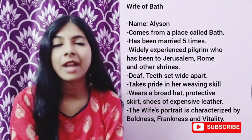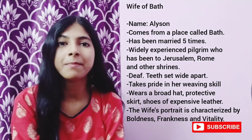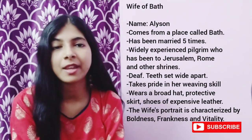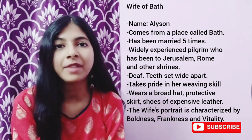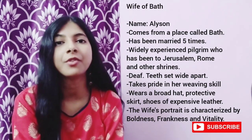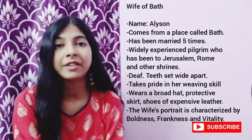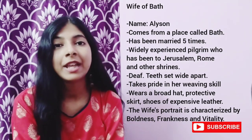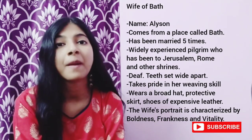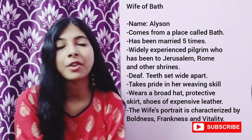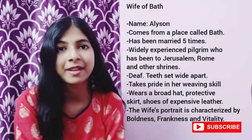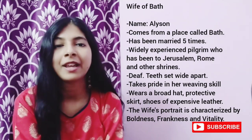The next pilgrim is the Wife of Bath. Her name is Alison and she comes from a place called Bath. She has been married five times. She can easily mix in male company and is skilled in the art of love. She loves traveling and has been to Jerusalem, Rome and various other shrines. She is deaf and her teeth are set wide apart. On the pilgrimage she wears a white hat, a protective skirt and shoes of expensive leather. The portrait of the Wife of Bath is one of boldness, frankness and vitality. She takes great pride in her skill in weaving.